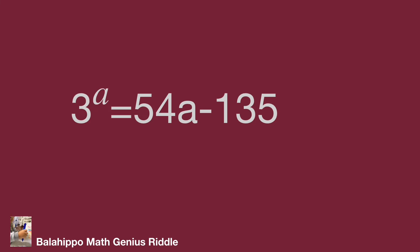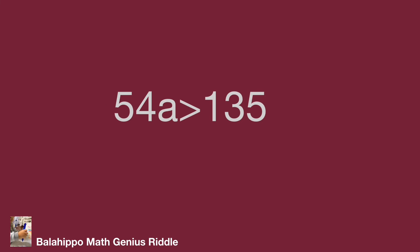a is an integer. Then 3 power a should be larger than 0. We get 54a minus 135 larger than 0. Then 54a larger than 135. So a is larger than or equal to 3. We get the scope of a.